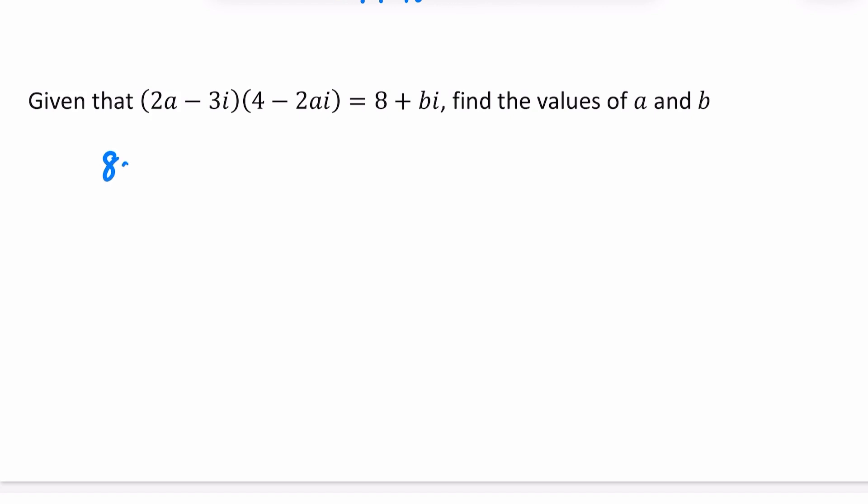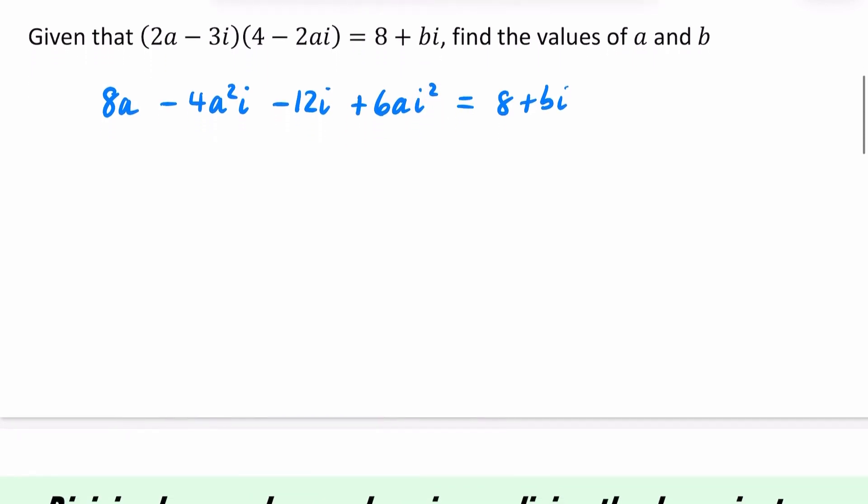I'm going to start by doing some bracket expansion on the left. I'm going to begin by timesing both of these things by 2a. So by 2a would give me an 8a and then a minus 4a squared i. I'm now going to do them multiplied by minus 3i. So 4 times minus 3i is minus 12i. And then the negative 3 and the negative 2 will give me a plus. So it's going to be a plus 6, and there's an a, and there's an i squared.